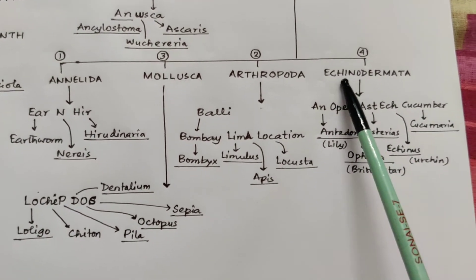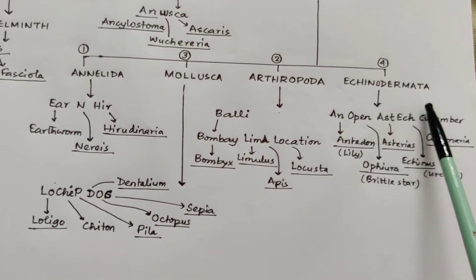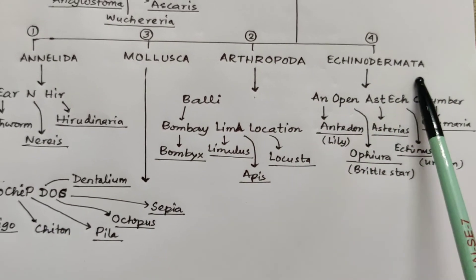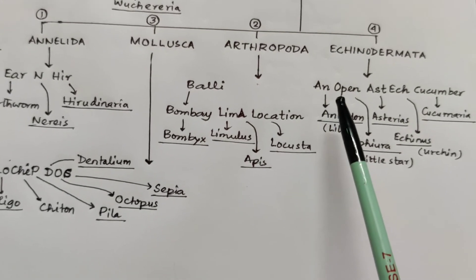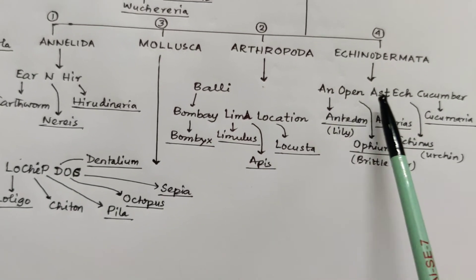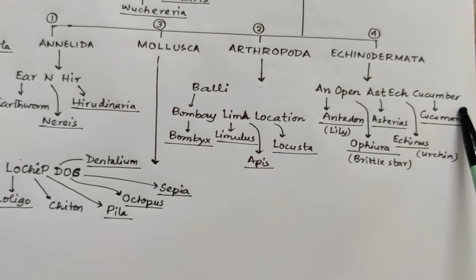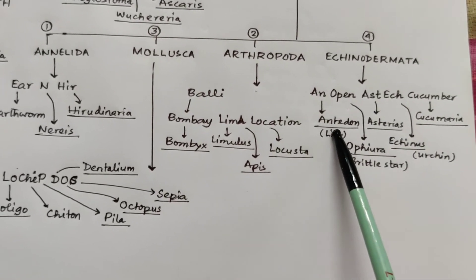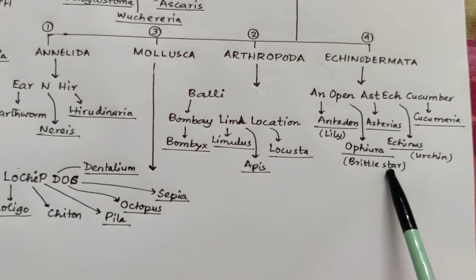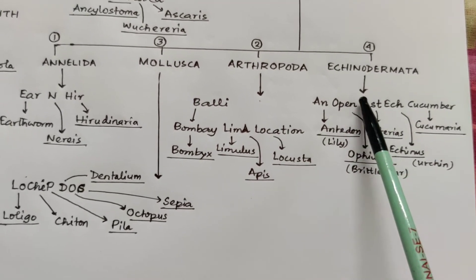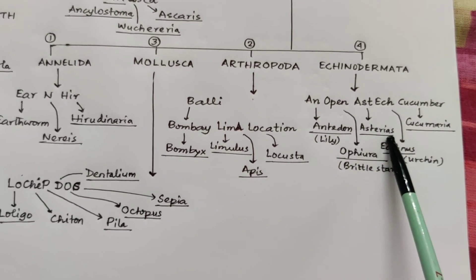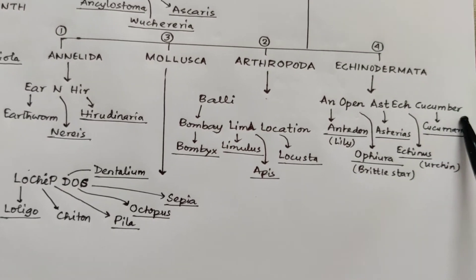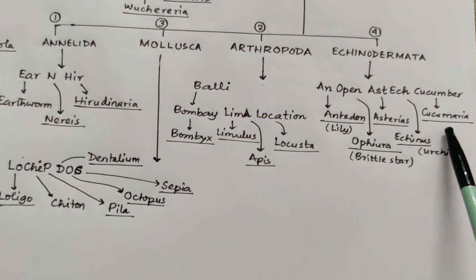The last one is Echinodermata — phylum of spiny-skinned animals. You have to remember: 'An Open Aztec Cucumber.' 'A' is for Antedon. 'O' is for Ophiura, meaning brittle star. 'Ast' for Asterias, which is starfish. 'Ech' for Echinus, for sea urchin. And 'Cucumber' for Cucumaria, meaning sea cucumber.